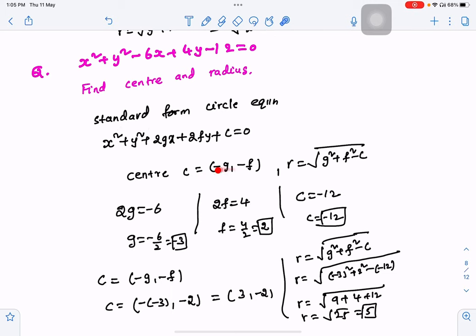The center formula is minus g minus f. The radius formula is g² plus f² minus c. That means g, f, c are 3 values. G, f, c will compare the three terms.